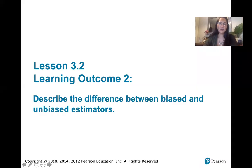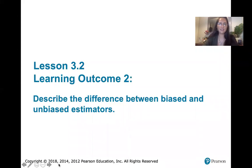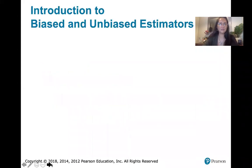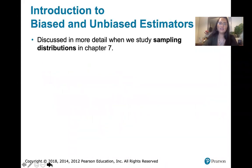In this video we discuss learning outcome number two, which is about the difference between biased and unbiased estimators. This is just an introduction to biased and unbiased estimators. We're going to get into this in a lot more detail when we study the sampling distributions in Chapter 7.